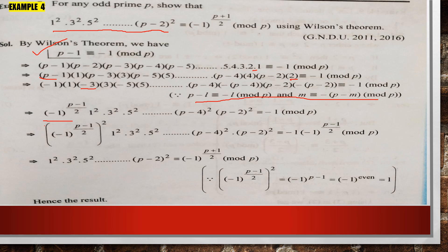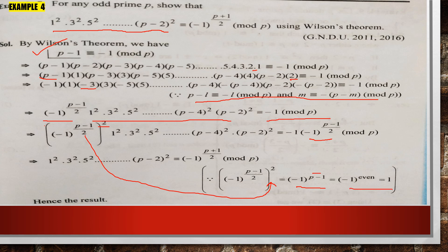For the even numbers 2, 4, ..., we use the fact that 2 ≡ -(p-2) (mod p) and similarly for 4. After rearranging and collecting all the minus signs — there are (p-1)/2 of them — we pair terms to get 1² · 3² · 5² · · · (p-2)² on the left. Multiplying both sides by (-1)^((p-1)/2), and since p is prime, (p-1) is even so this factor equals 1. Hence we prove 1² · 3² · · · (p-2)² ≡ (-1)^((p-1)/2) (mod p). We took Wilson's theorem, expanded the factorial, rearranged terms, and used these two congruence properties to prove the result.